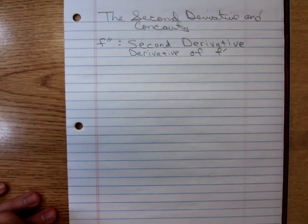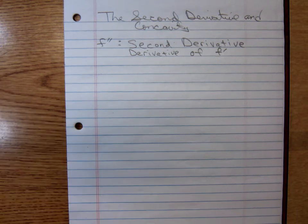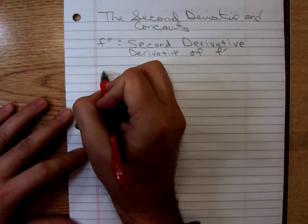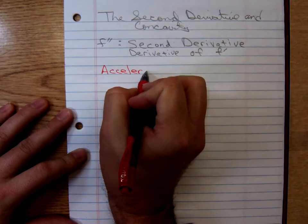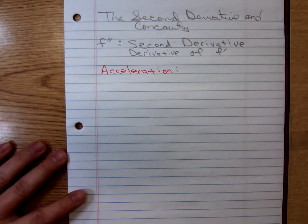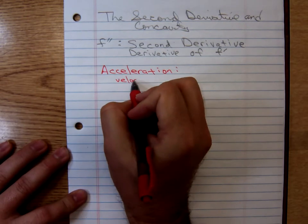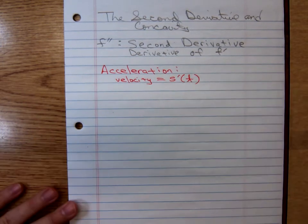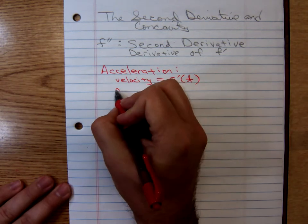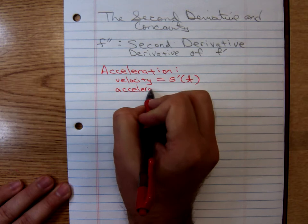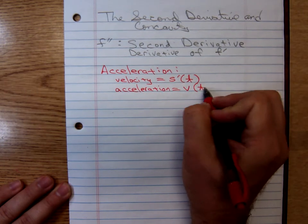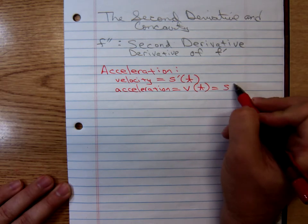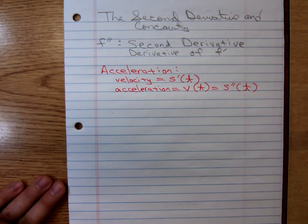We're going to look at three general applications for the second derivative. The first one was acceleration. Velocity is the derivative of position, and acceleration is the derivative of velocity, which means it's the second derivative of position. We did a couple of examples involving acceleration.